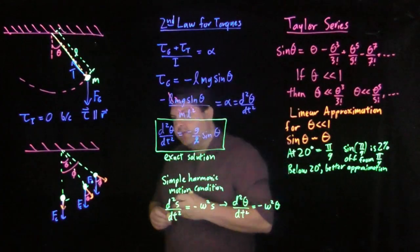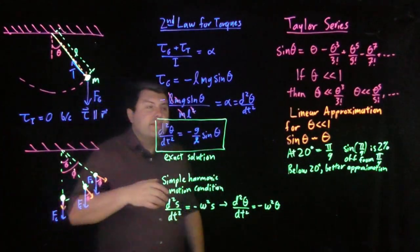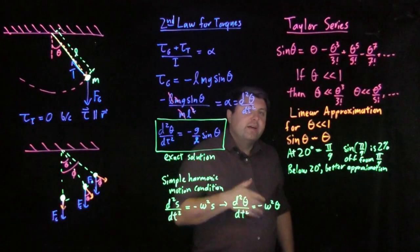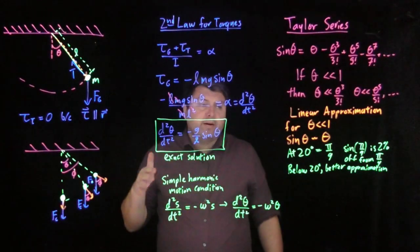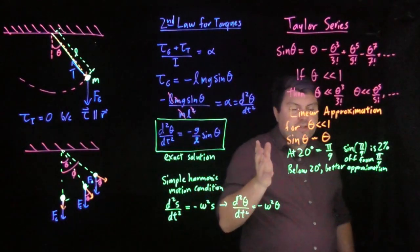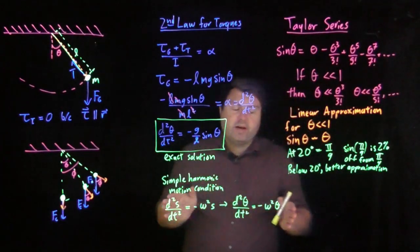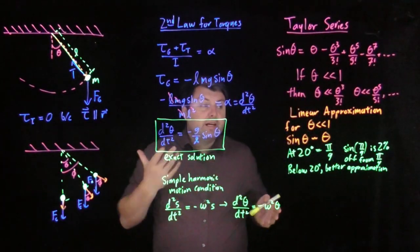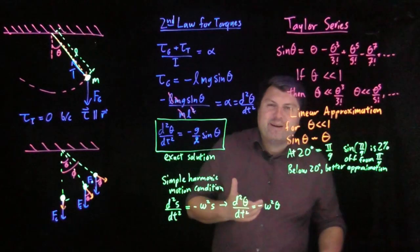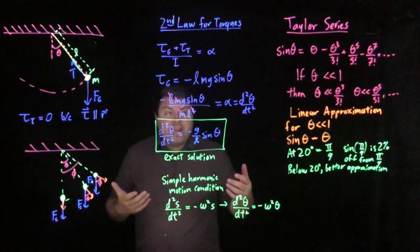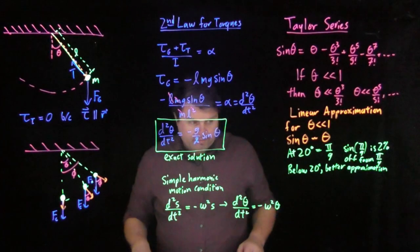So if our angle is 20 degrees or less, then sine theta being roughly equal to theta is 2% or better in terms of how far they are off. A lot better than a lot of our labs, a lot better than a lot of other approximations. It's pretty good.